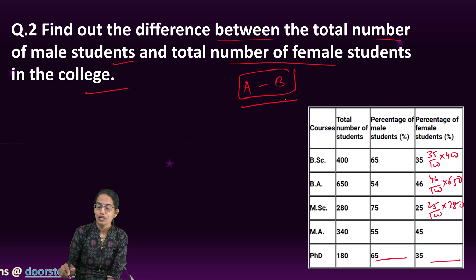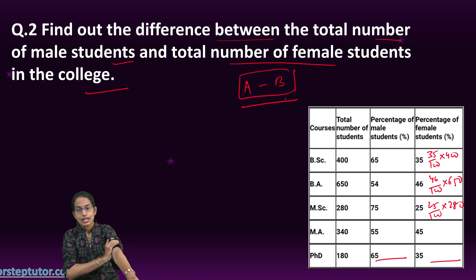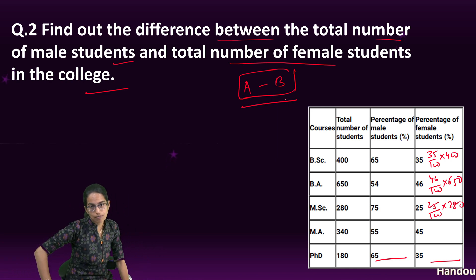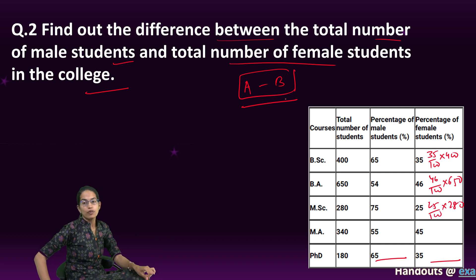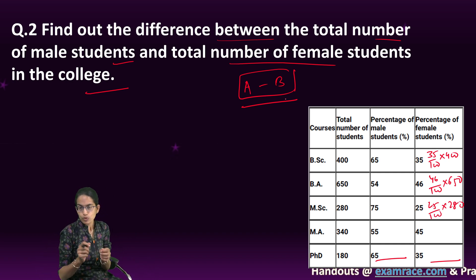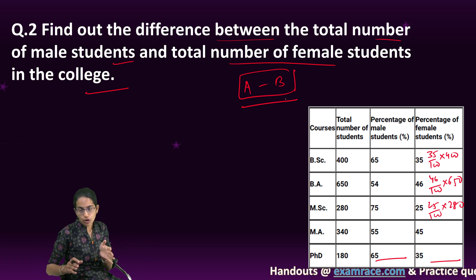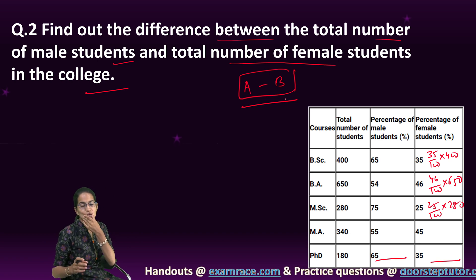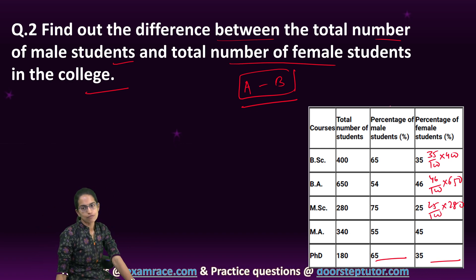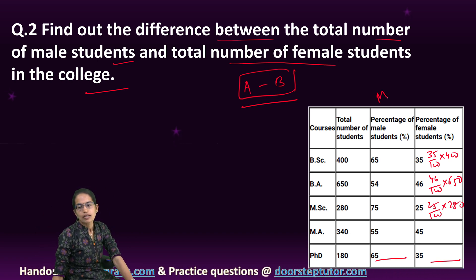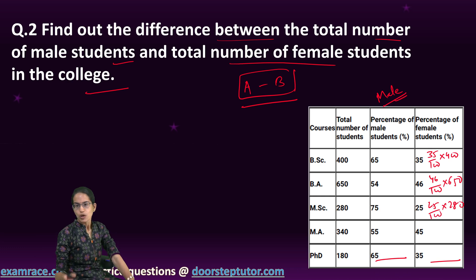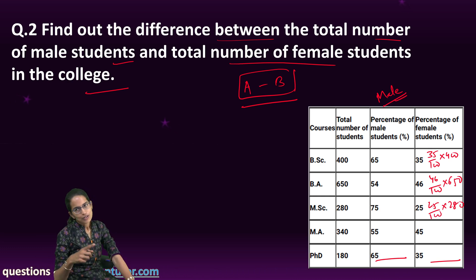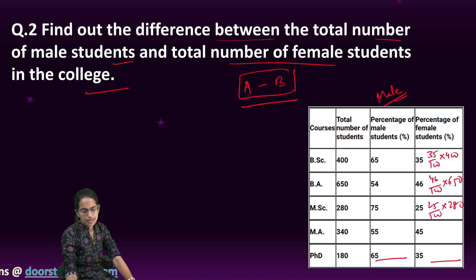Any question you are doing on data interpretation, it's a good idea — if you are solving something for one of the questions, keep that value safe. Don't do it all in rough. Keep the values safe because those could be used for the next set. For example, the total number of male students we already calculated in the last question is useful here as well. You need not repeat that again.